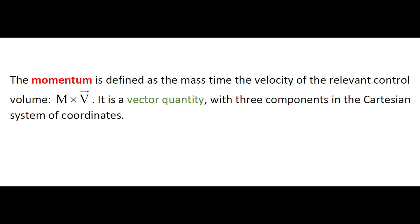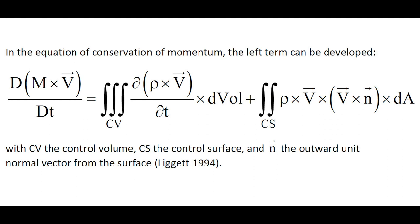Let us now develop the momentum term in the equation of conservation of momentum. The left term can be developed as shown here, where CV means the control volume and CS means the control surface of the control volume.